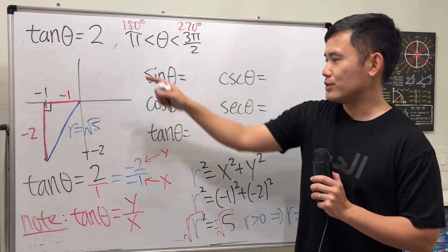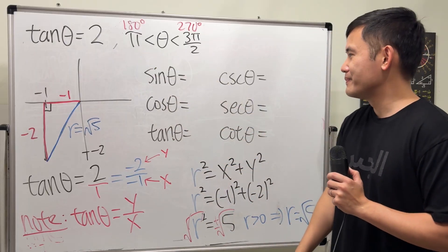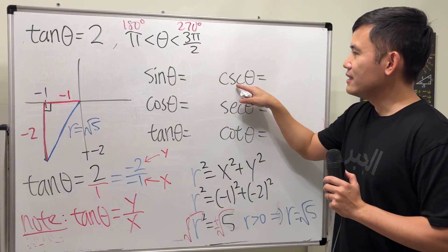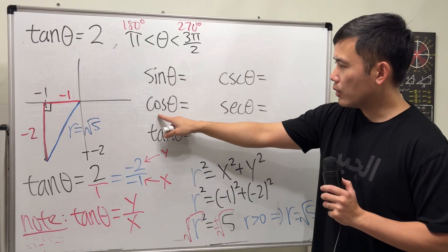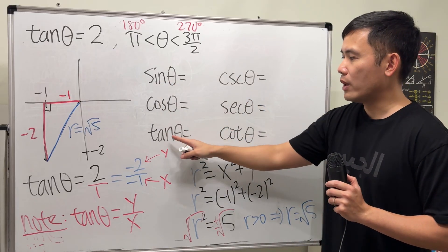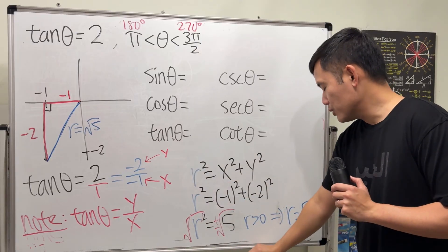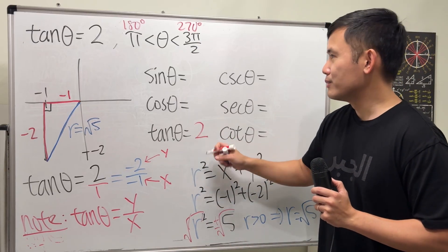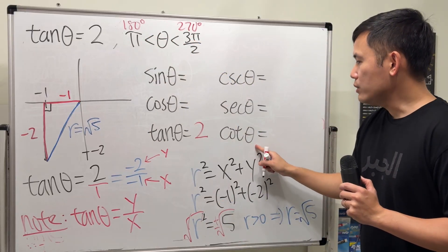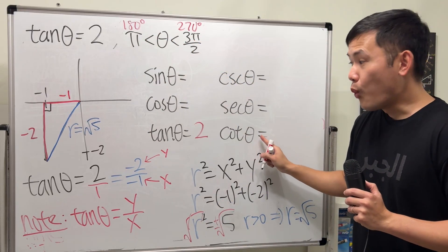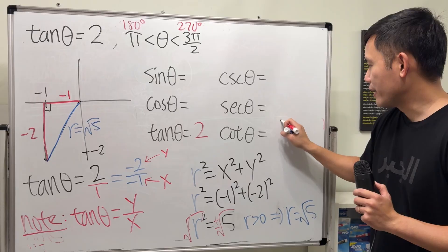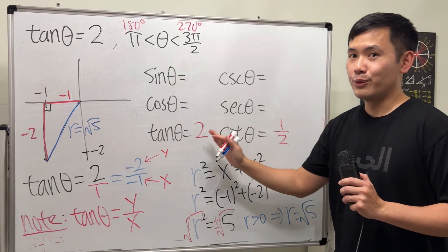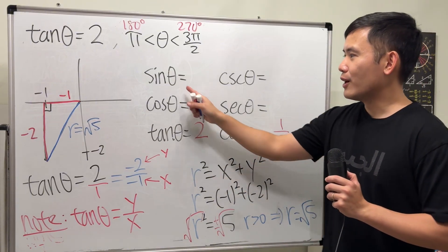I know tangent is 2, but I still really want to have it here. Cosecant is 1 over sine, secant is 1 over cosine, and cotangent is 1 over tangent. Now we just have to fill this out. For tangent, it's easy, it's just 2. Cotangent is 1 over that, so just 1/2. That's also pretty much for free right now.